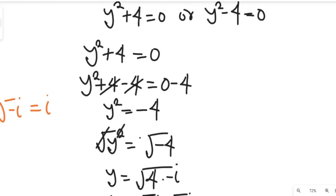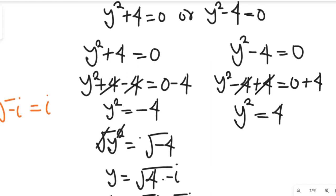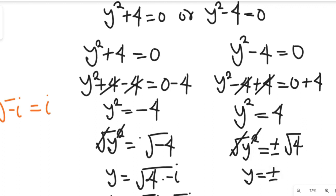Now let's solve the second equation: y squared minus 4 equal to 0. Adding 4 to both sides gives y squared equal to 4. Taking the square root of both sides, we get y equal to plus or minus 2.